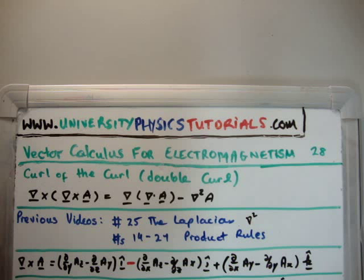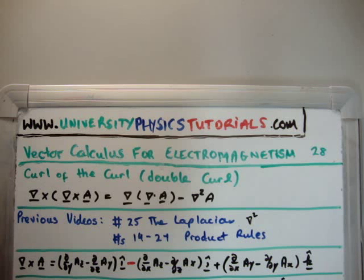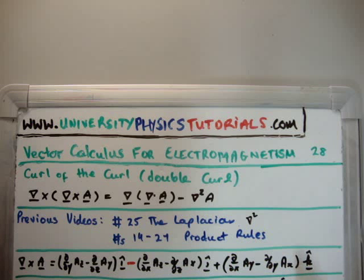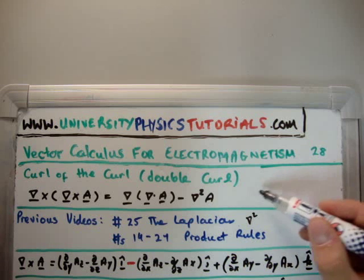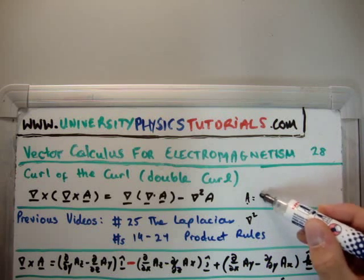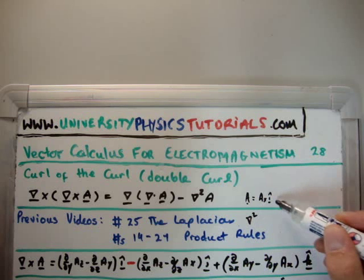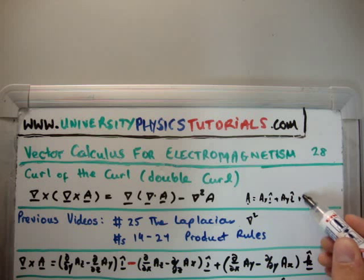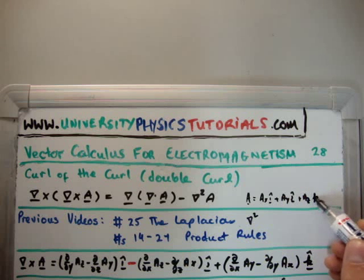So the first thing I'm going to do is take the curl of A. The curl of A is pretty straightforward. The point to note here is that we're getting back a vector field. i hat, j hat, k hat. Here we define the vector A as A sub x in the i hat direction, plus A sub y in the j hat direction, and finally A sub z in the k hat direction.